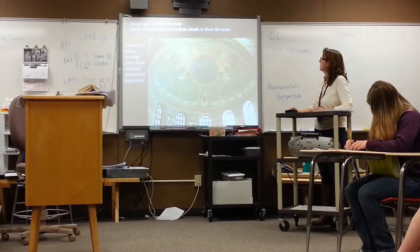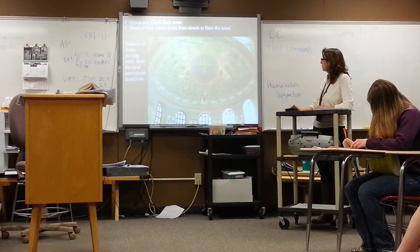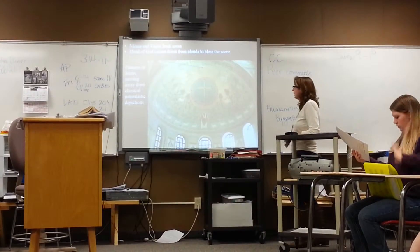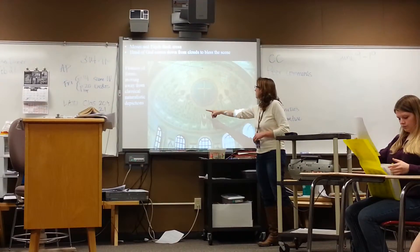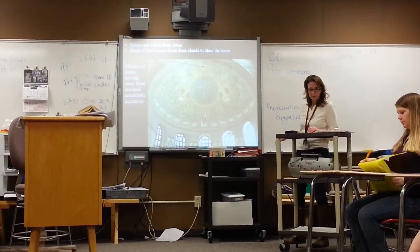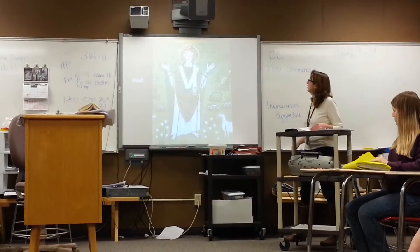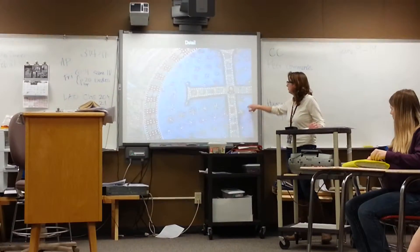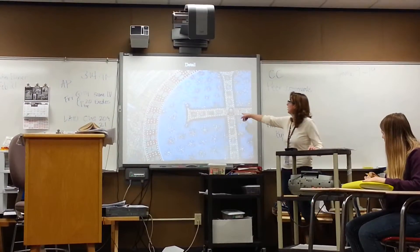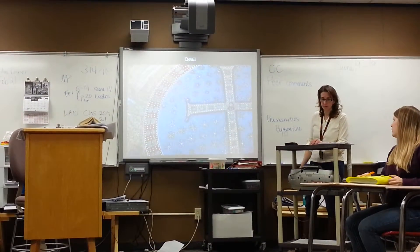We have Moses and Elijah flanking the cross. The flatness of the form is moving away from classical and naturalistic depiction — again, it's very, very flat. They do have some light effects going on. Here's a close-up of it, a real close-up. You can see Christ's image is actually on the inside of the cross.